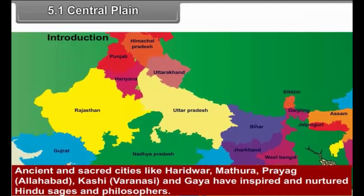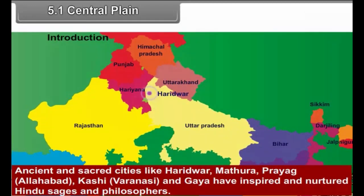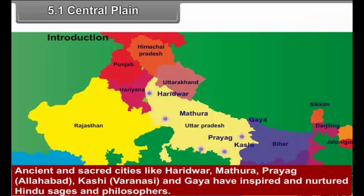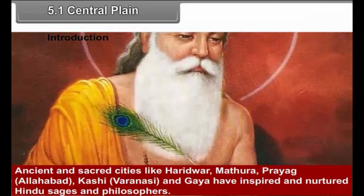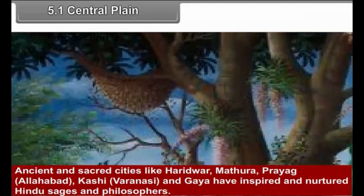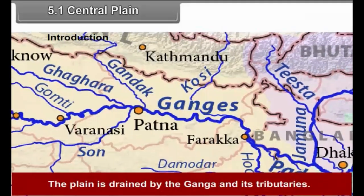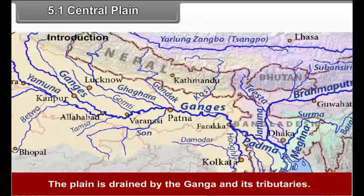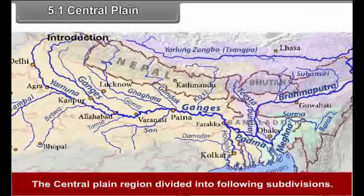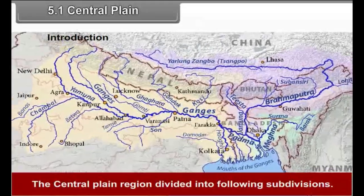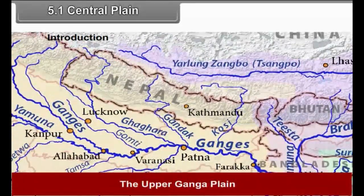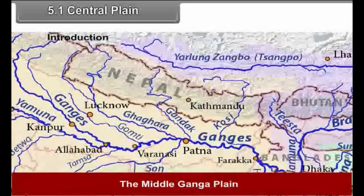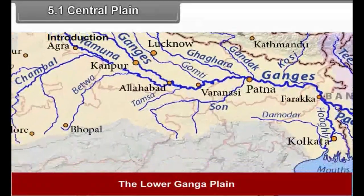Ancient and sacred cities like Haridwar, Mathura, Prayag, Kashi and Gaya have inspired and nurtured Hindu sages and philosophers. The plain is drained by the Ganga and its tributaries. The central plain region is divided into the following subdivisions: the upper Ganga Plain, the middle Ganga Plain, and the lower Ganga Plain.